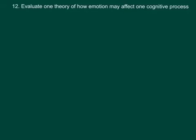The last learning outcome we're going to look at for cognitive is number 12: evaluate one theory — the strengths and limitations — of how emotion may affect one cognitive process. What cognitive process do you guys think we're going to be doing? Memory!